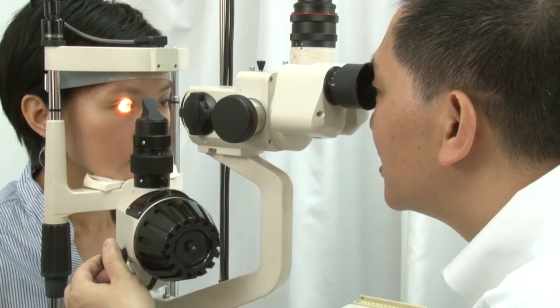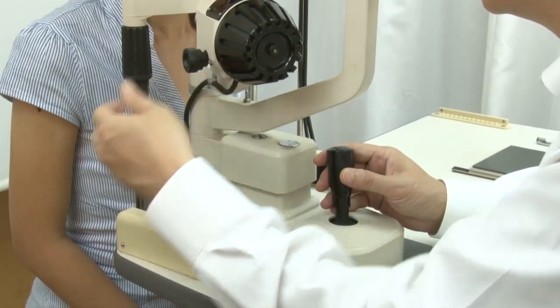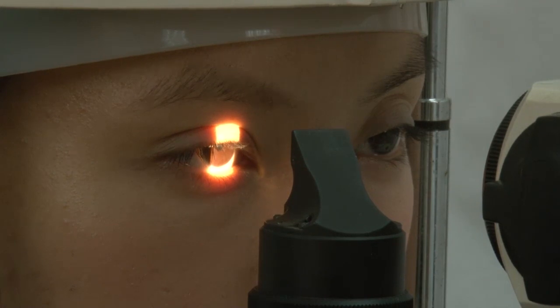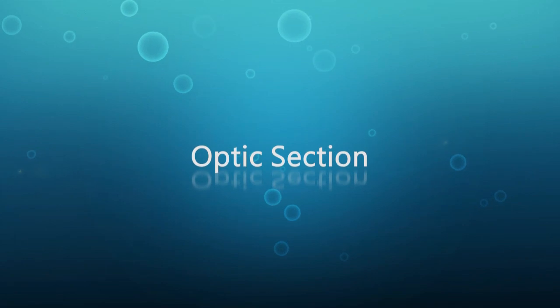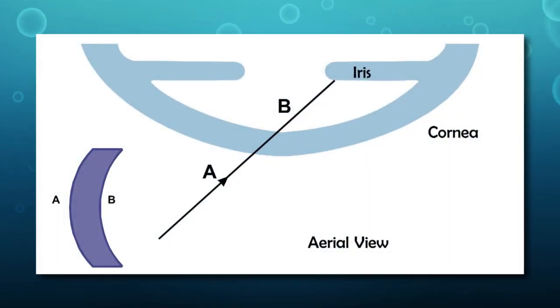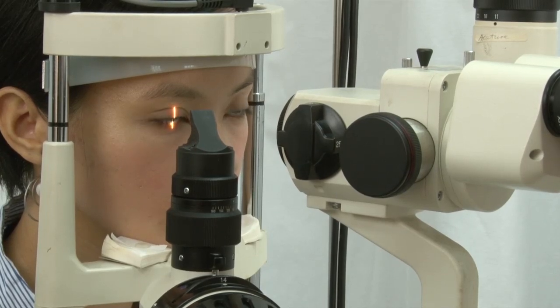To perform the parallelepiped technique, maintain the angle between light source and microscope at about 45 to 60 degrees. Change from diffuse illumination to a parallelepiped by narrowing the slit lamp beam to about one to two millimeters. Magnification generally begins from low to medium. An optic section can be created from a parallelepiped by narrowing the slit width to a thin slit. Magnification should be set at medium to high to provide the best view of the cornea.